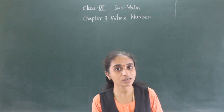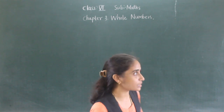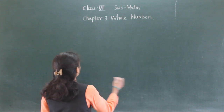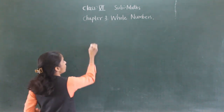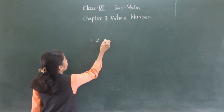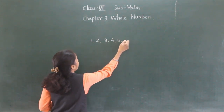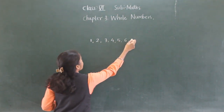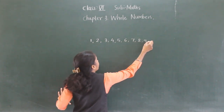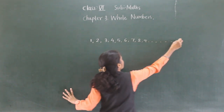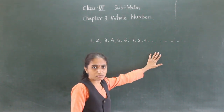The natural numbers are 1, 2, 3, 4, 5, 6, 7, 8, 9 and so on. These are the natural numbers.